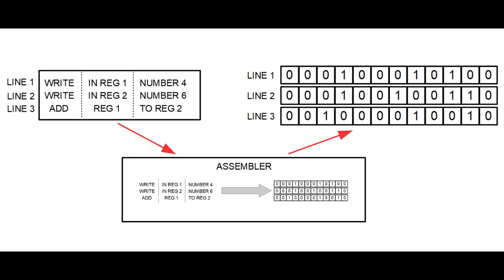Although assembly language is much easier than writing raw zeros and ones, it is still very difficult to write large and complex programs, and you also need to understand very well how the microcontroller is built. This is why there are higher-level programming languages like C and C++ that simplify programming even further. Their main benefits are that they are easier to understand and greatly reduce the time needed to create a program — what takes five or ten lines in assembly can often be reduced to one line. They are also more abstract, meaning you don't need to understand the hardware as deeply.